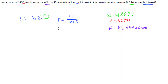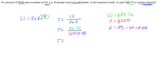Now let's put this into our formula. We have simple interest $86.70 divided by our principal $250 multiplied by our rate 0.08, and putting that into our calculator we find a time of 4.335 years.